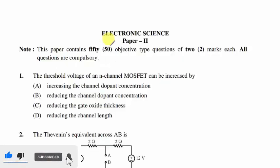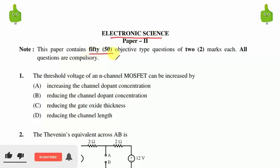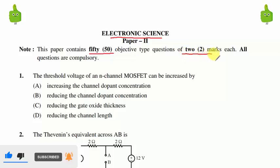Hello friends, in this video let us discuss the Electronic Science paper which was conducted by UGC NET. I am going to discuss 50 questions — all questions were MCQ-based, each question carries two marks, and all the questions were compulsory.